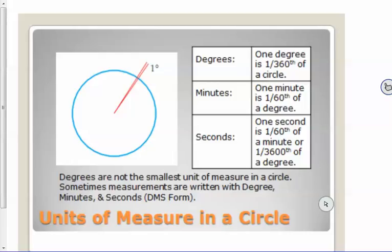Units of measure in a circle. So real quick, you already know that degrees is the most degrees you can have in a circle is 360. You go beyond 360, the only issue is that you just keep spinning and spinning. Well, if a degree is one three hundred and sixtieth of a circle, then a minute is one sixtieth of a degree, and a second is one sixtieth of a minute or one three thousand six hundredth of a degree.